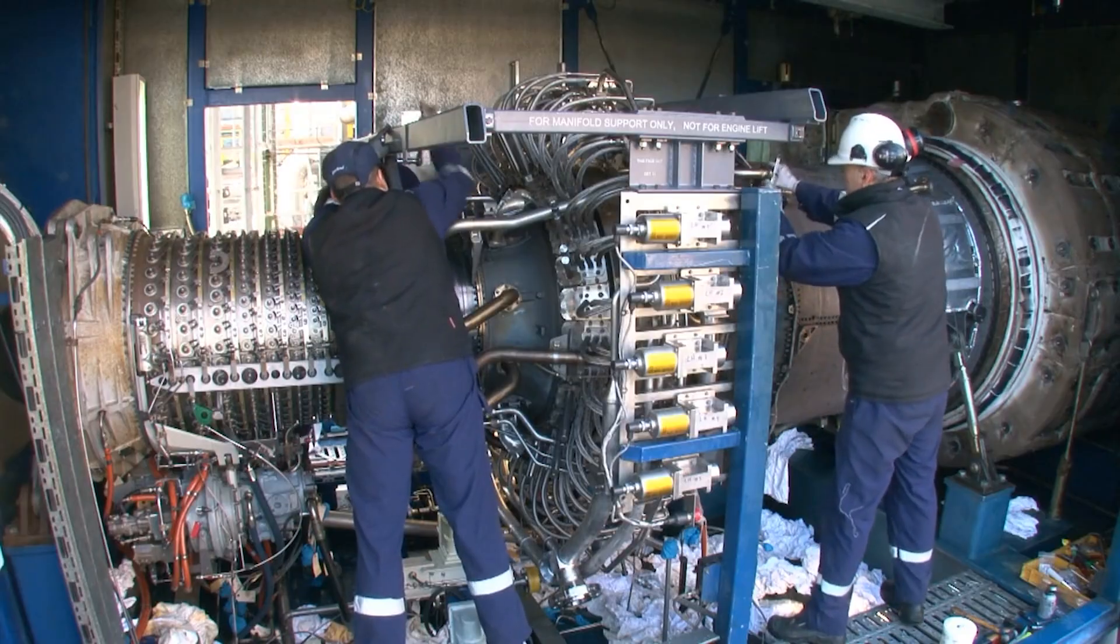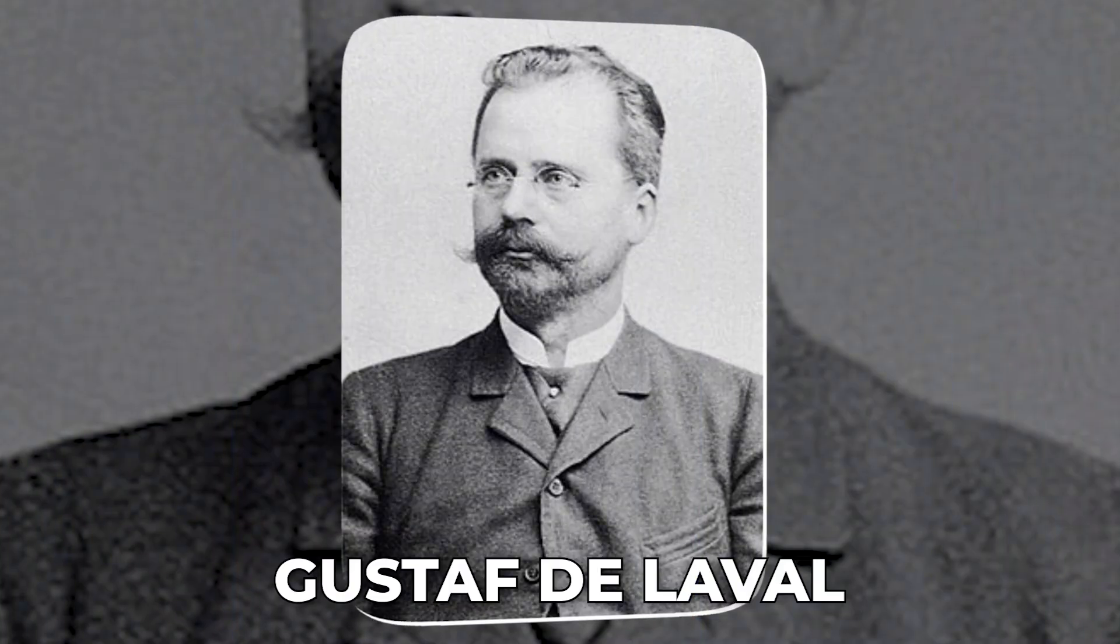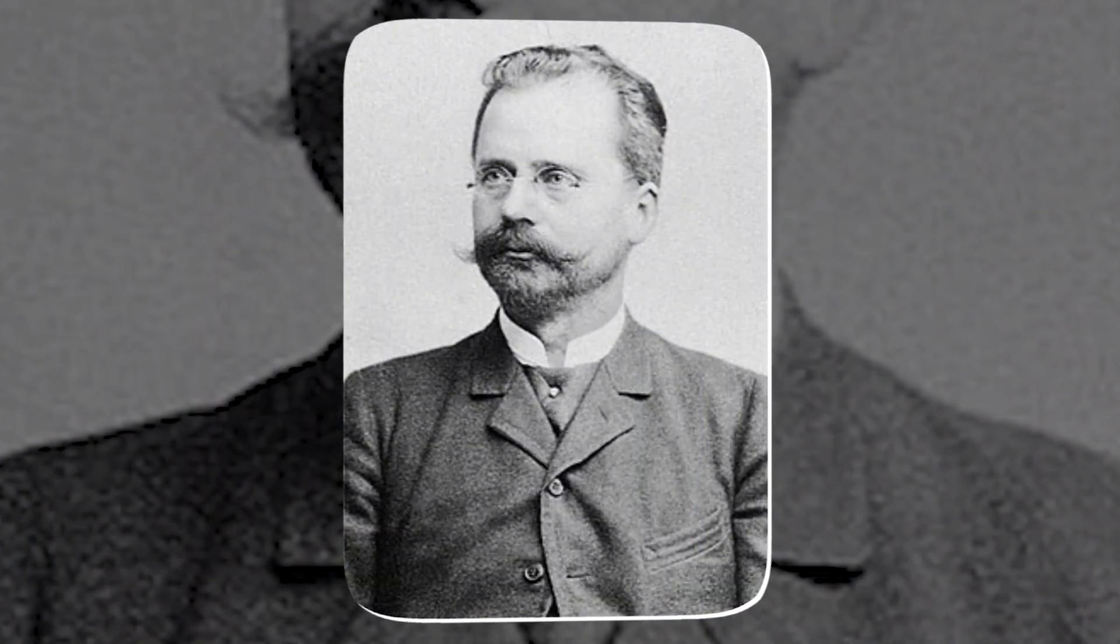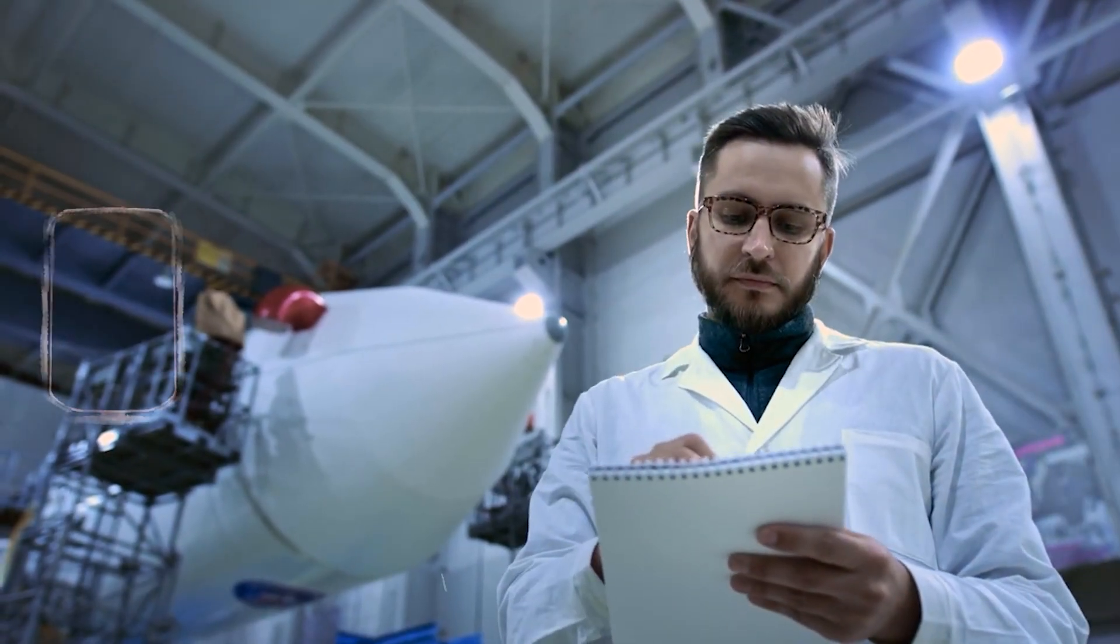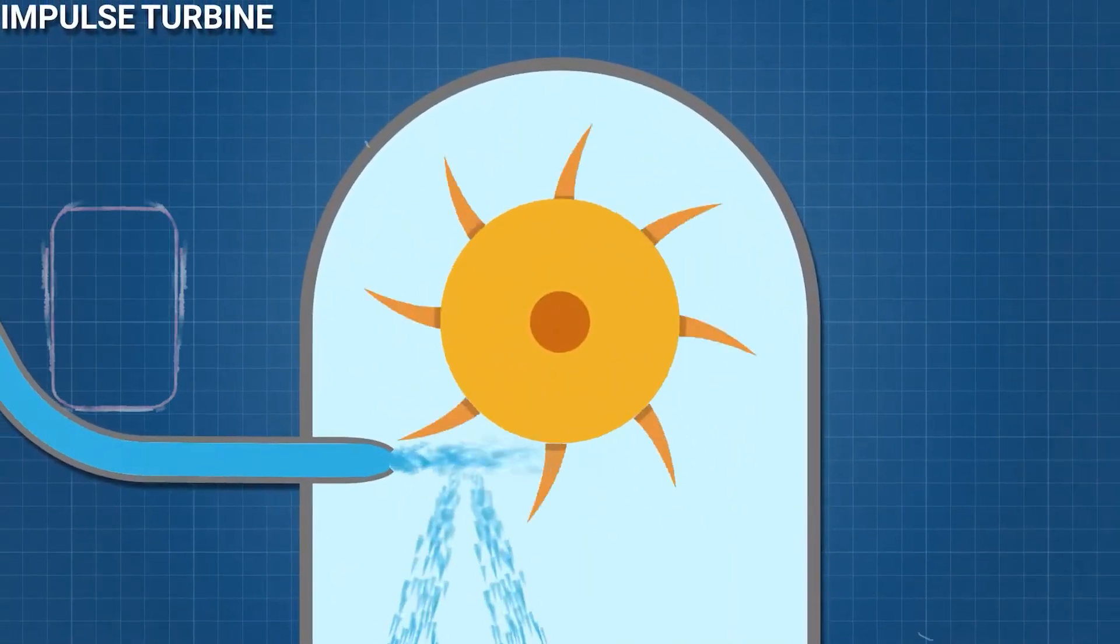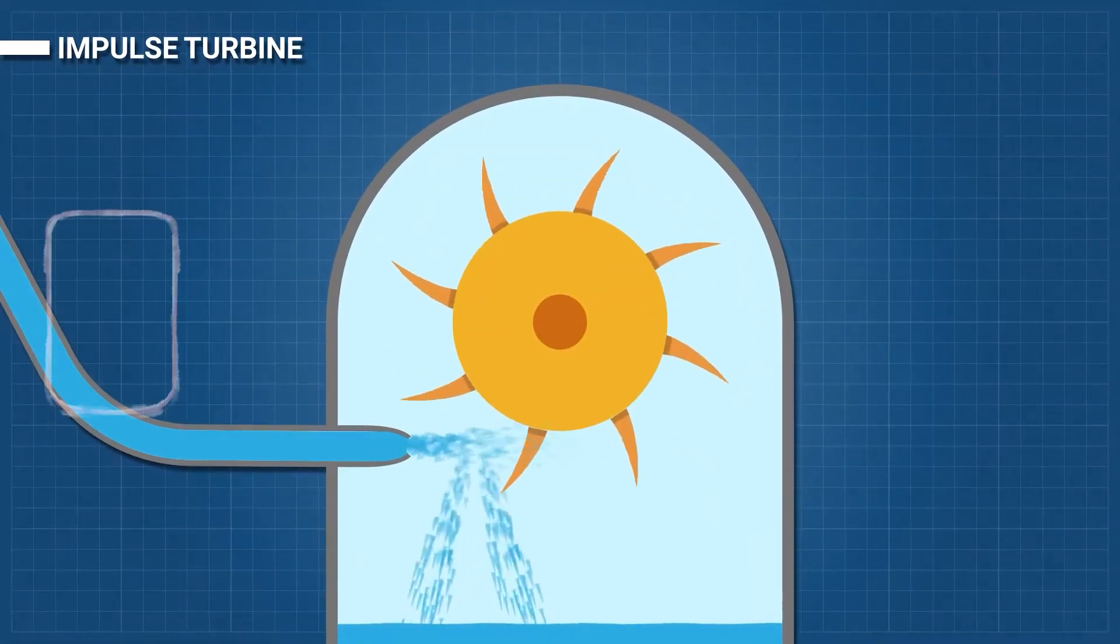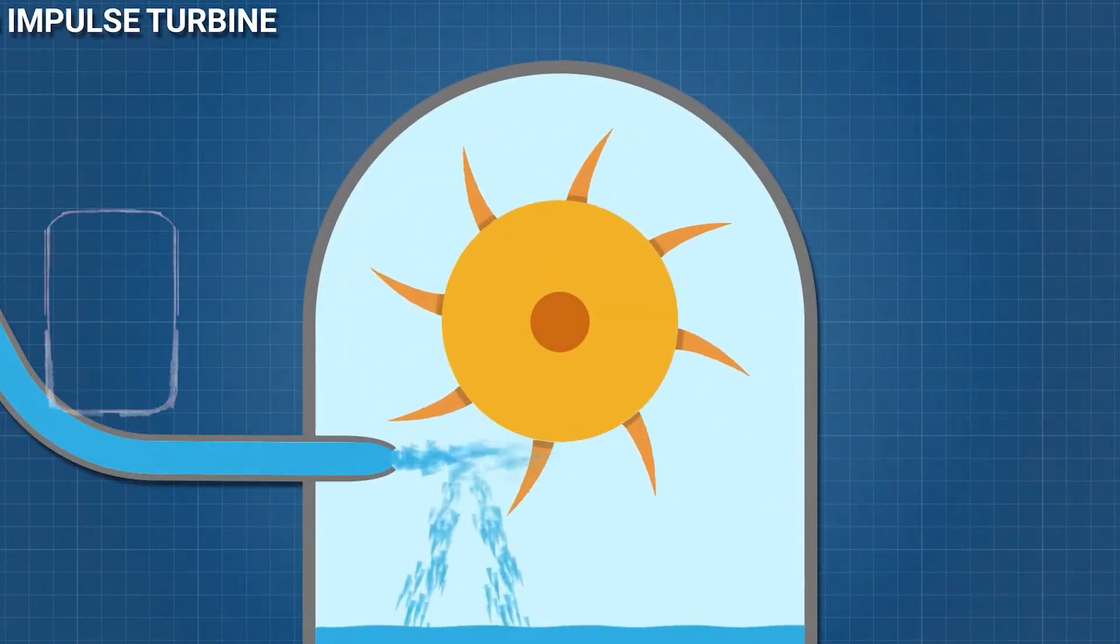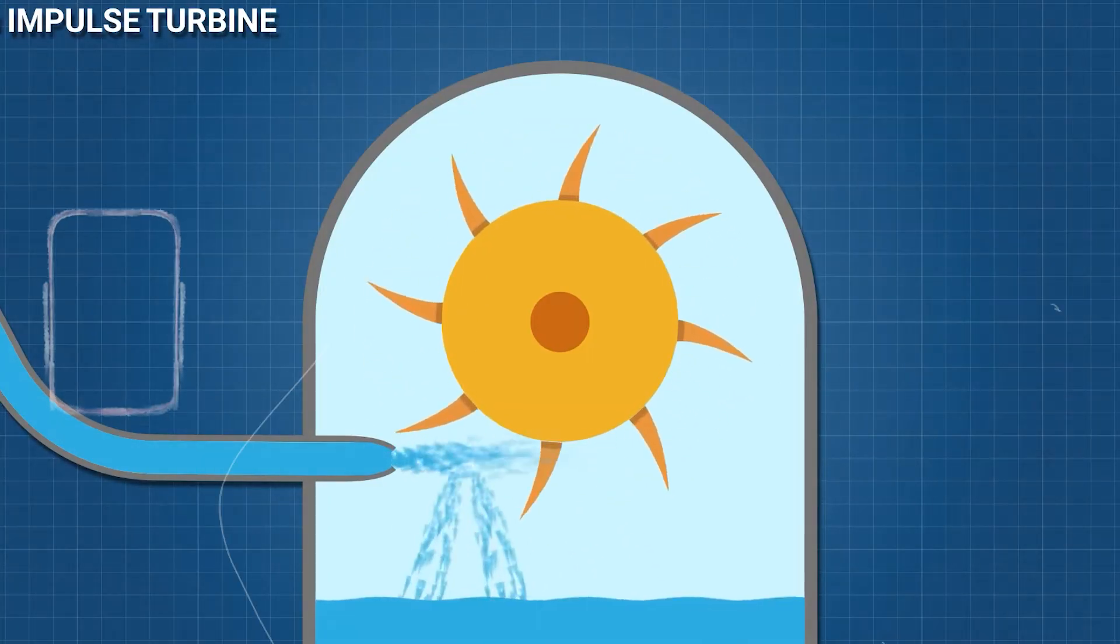But not all turbines are gentle or smooth. Another type, impulse turbines, takes a different approach. Gustav de Laval, the same Swedish inventor whose nozzle design later became key in rocket engines, developed this one. He didn't build rockets himself, but his nozzle helped future engineers do it. The impulse turbine's idea is simple. Instead of gradually guiding the steam, it blasts it at high speed directly onto blades or buckets. The fluid hits hard, bounces off, and transfers its momentum into motion. The faster the fluid hits, the more power it gives.